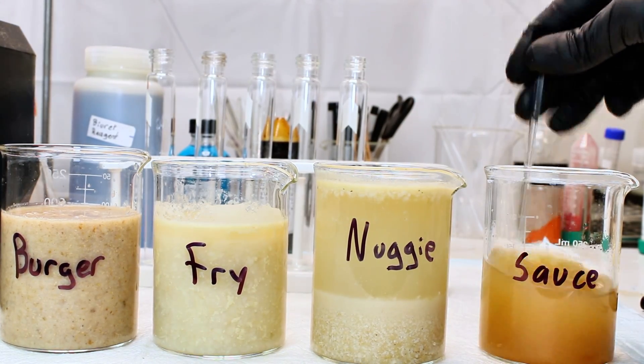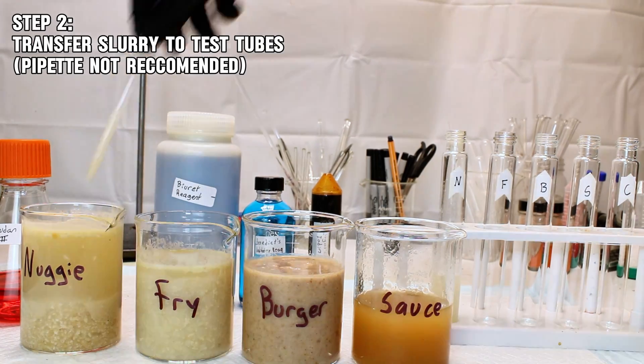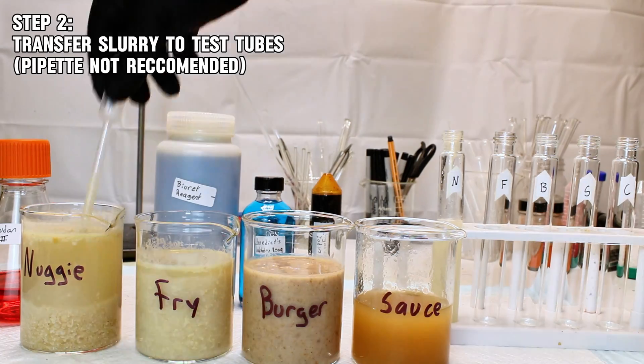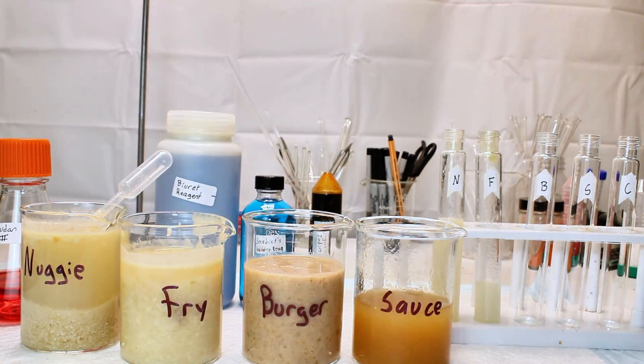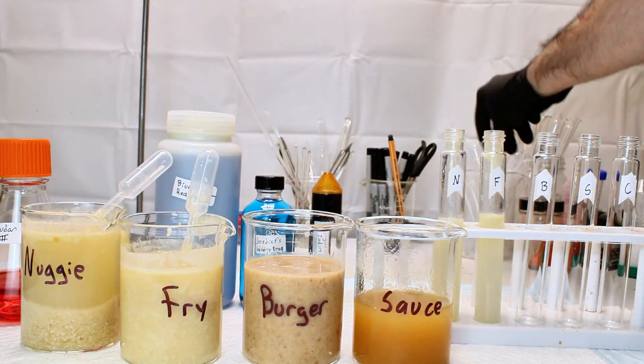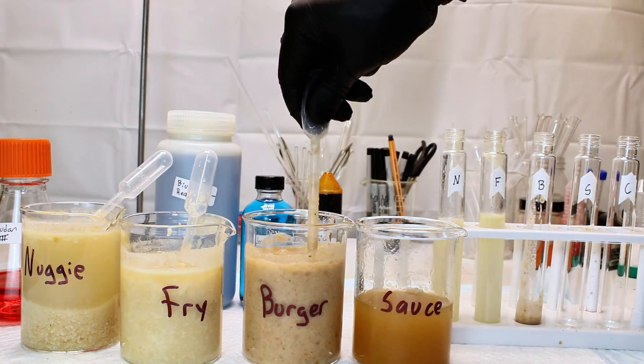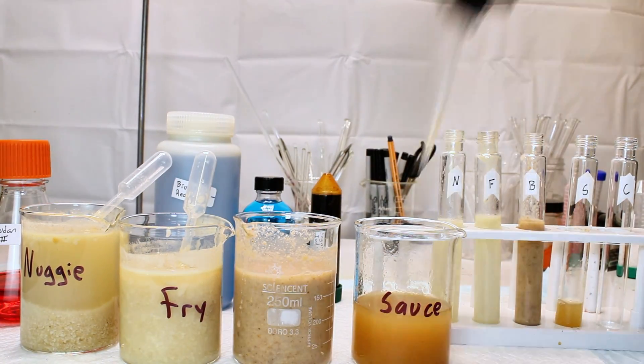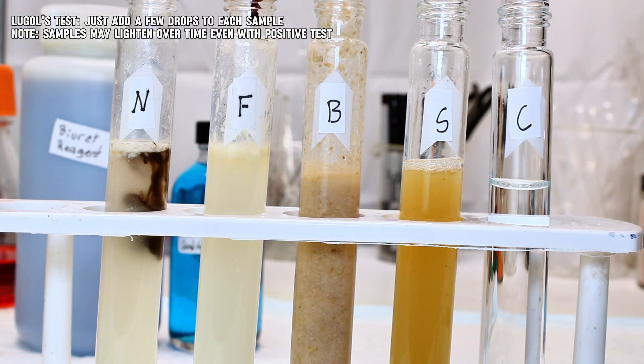To do this, I began by pipetting some of each sample into four respective test tubes. None of these food slurries were in any way really homogenous, and tended to clog the pipettes to the point that eventually, I just started pouring them into the test tubes. A fifth test tube was filled with distilled water to act as a control. Once this was done, I then simply added a few drops of Lugol's iodine to each solution and watched for a color change.